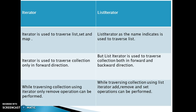Next, iterator is used to traverse a collection only in the forward direction. We can traverse the collection only in forward direction using the iterator. But using list iterator we can traverse both in forward as well as backward direction.